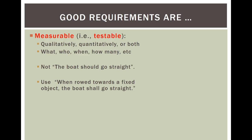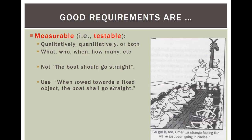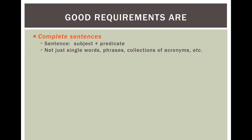For example, not just 'the boat should go straight' — that sounds reasonable but isn't precise. A better requirement is 'when aimed toward a fixed object, the boat shall go straight.' Requirements need complete sentences with subject first and predicate, not just single words or collections of acronyms. We want to spell things out, be specific and precise in what we say.